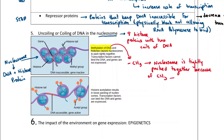This tight packing physically blocks RNA polymerase from binding and starting transcription. The RNA polymerase bumps into the histone proteins and transcription cannot occur. So methylation allows for a physical block that prevents the DNA from being transcribed.